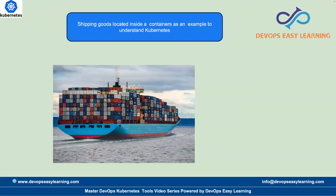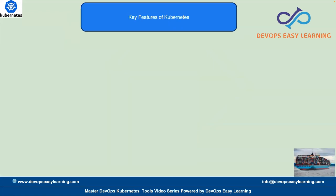To understand Kubernetes easily, let's take an example of a ship with a lot of containers, like you see in this picture. We have a ship with a lot of containers, and let's say shipping goods are located inside the containers. We are going to use this example of shipping goods inside containers to understand Kubernetes.